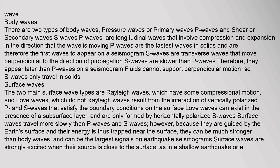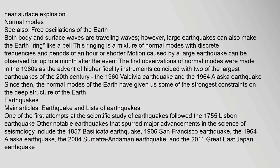The two main surface wave types are Rayleigh waves, which have some compressional motion, and Love waves, which do not. Rayleigh waves result from the interaction of vertically polarized P and S waves satisfying the boundary conditions on the surface. Love waves can exist in the presence of a subsurface layer and are only formed by horizontally polarized S waves. Surface waves travel more slowly than P and S waves; however, because they are guided by the Earth's surface and their energy is trapped near the surface, they can be much stronger than body waves and can be the largest signals on earthquake seismograms. Surface waves are strongly excited when their source is close to the surface, as in a shallow earthquake or a near-surface explosion.